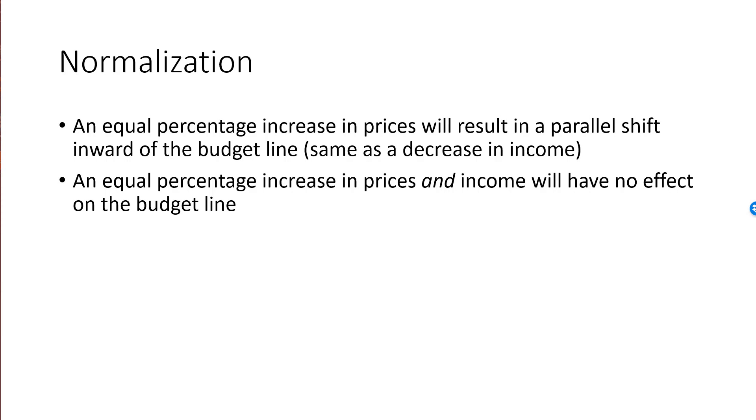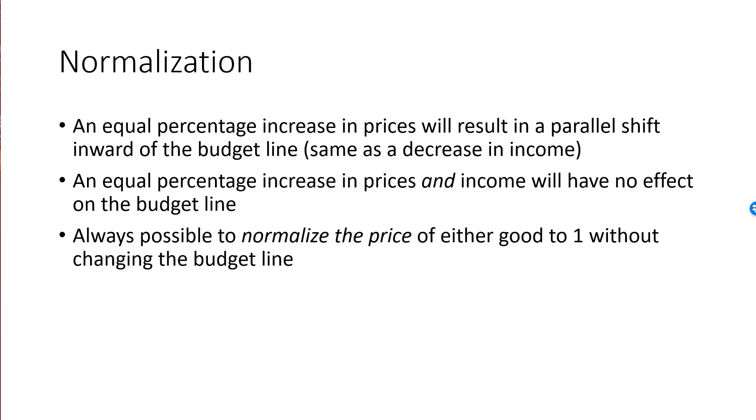Since 1 euro is about 10 Swedish crowns, going from Euro to crowns would simply mean that all prices and income will be multiplied by 10, and that should not affect my budget. Due to this one degree of freedom, we can normalize the price of either good to one with no change in the budget line, or we could normalize income to one.